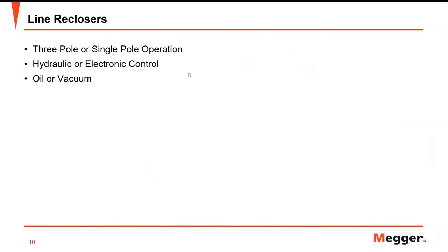Reclosers are also designed to use either oil or vacuum as the interrupting medium. In oil reclosers, the same oil is used for both arc interruption and basic insulation. Vacuum reclosers use either oil or air as the basic insulation medium.